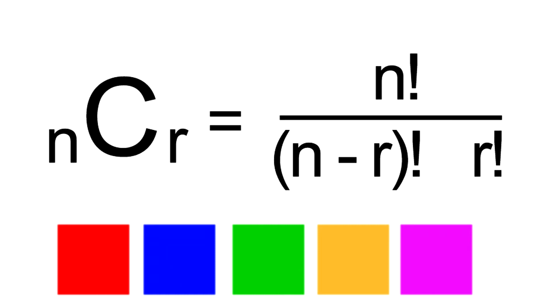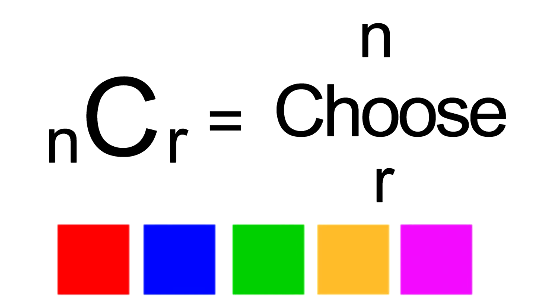Combination notation is also written as little n, capital C, and little r: n-c-r, also known as n choose r.